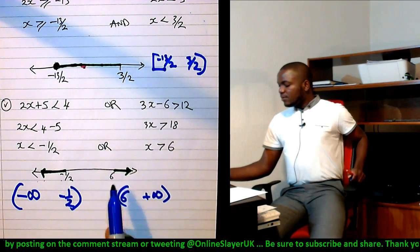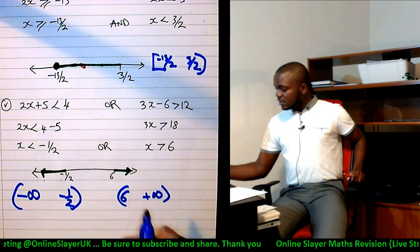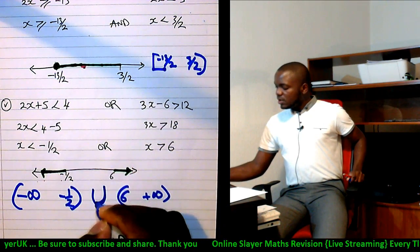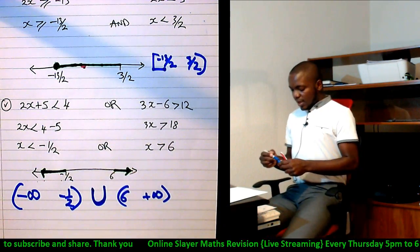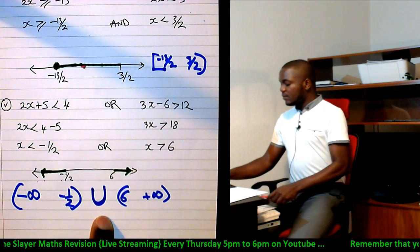And you've got 6 to positive infinity. Both of them are not included, but it says 'or', so 'or' means that this is possible or this is the case. So 'or,' we use the word union. That's the U you get to see. We'll talk about probabilities later on.